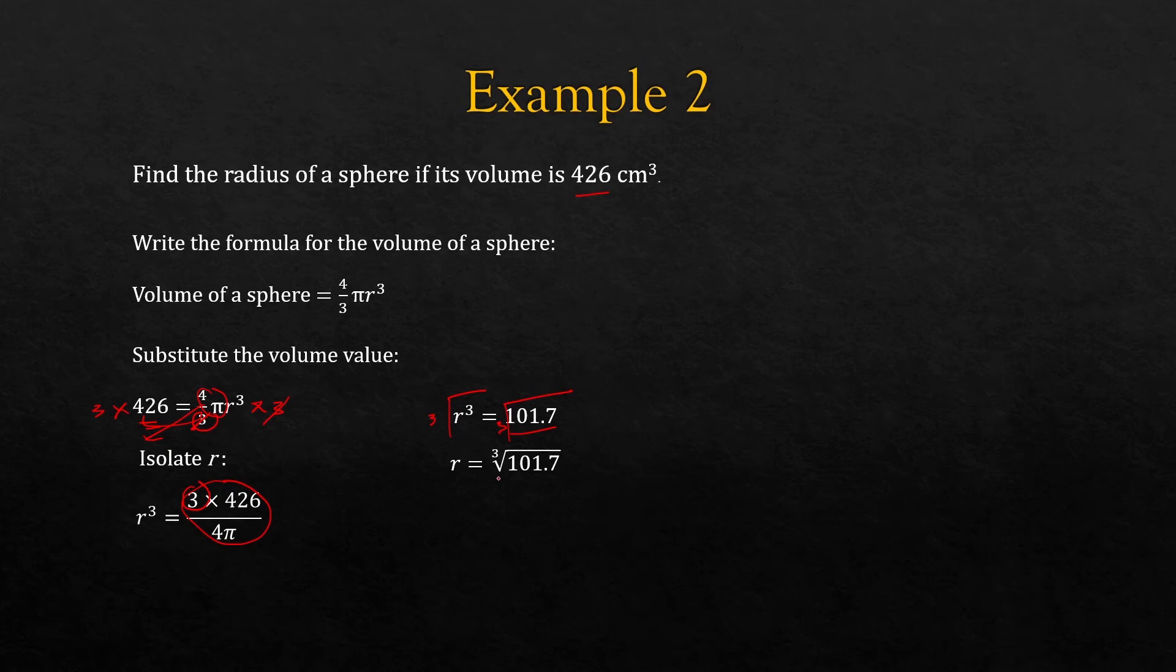As is shown here. So the radius is the cube root of 101.7, which is 4.67 centimeters to two decimal places.